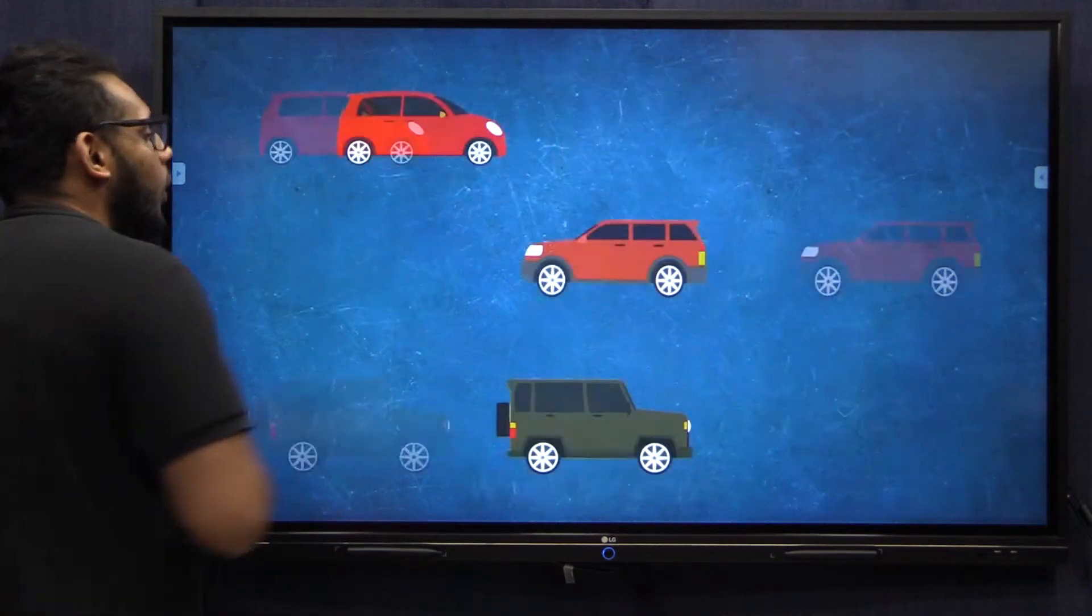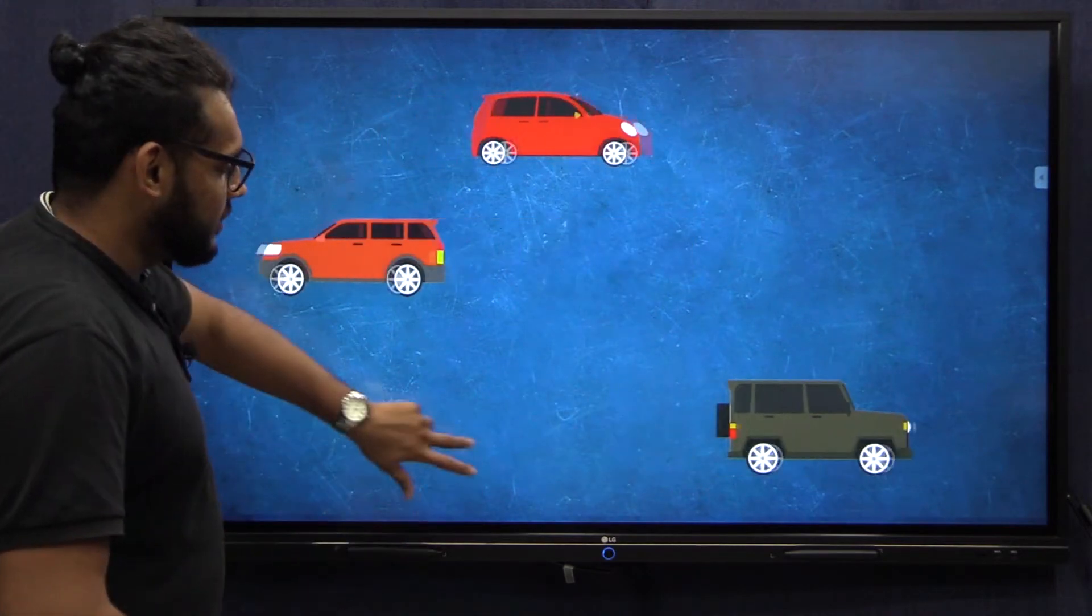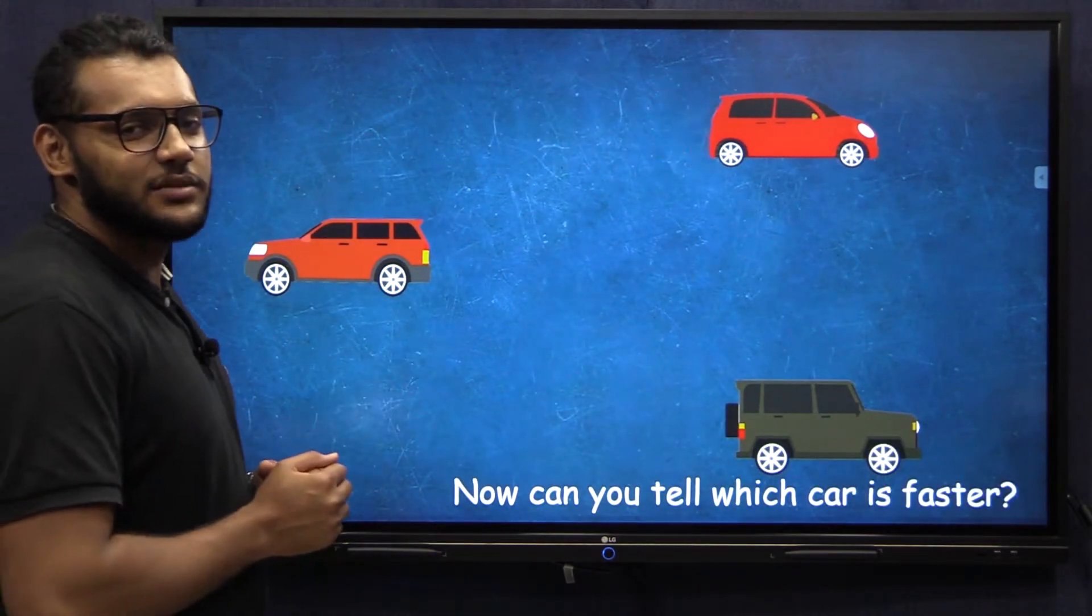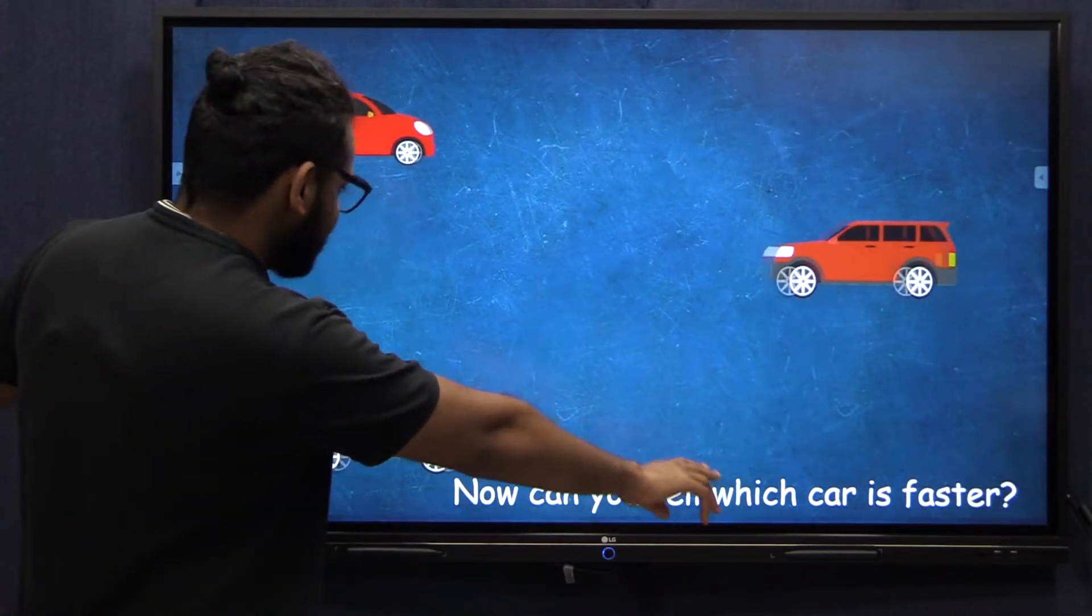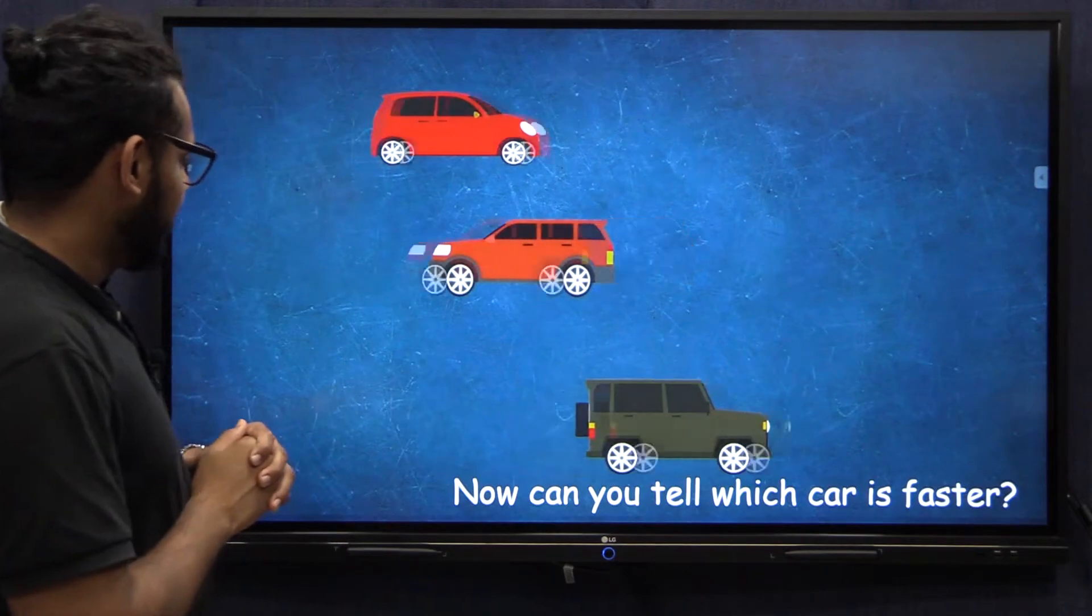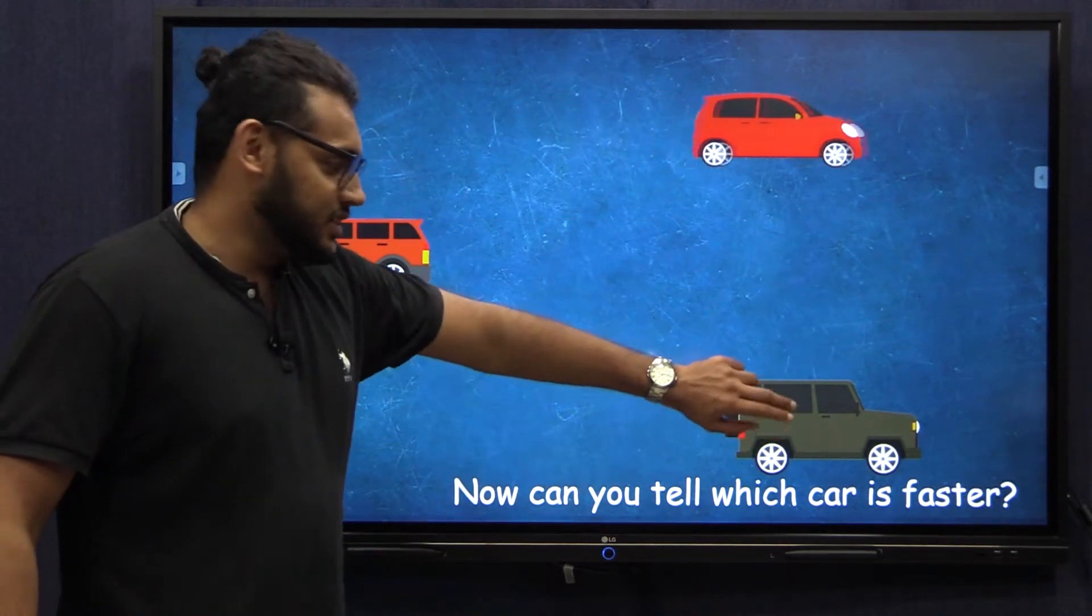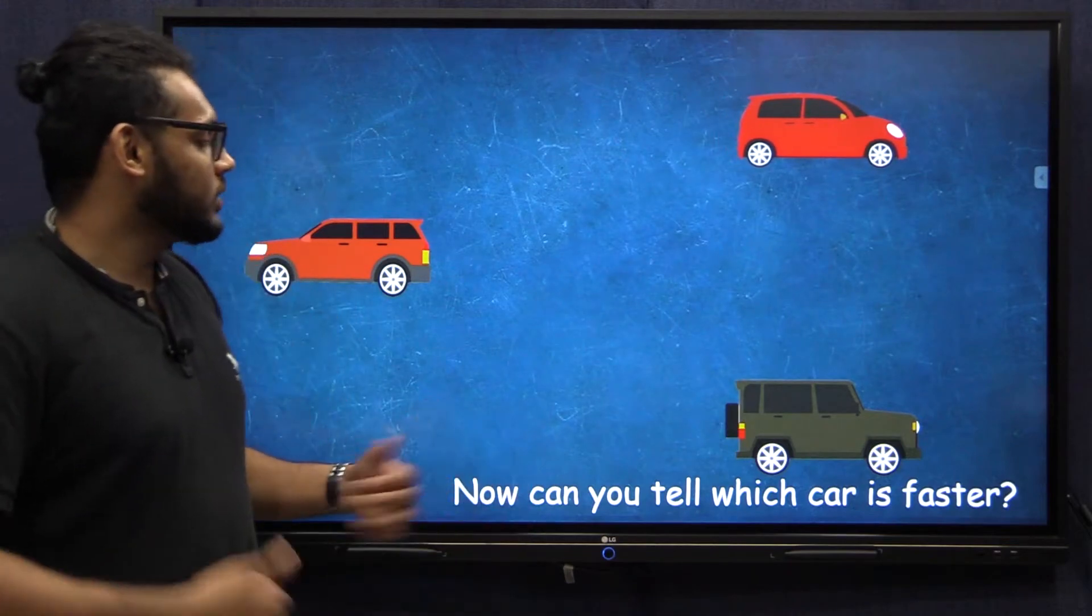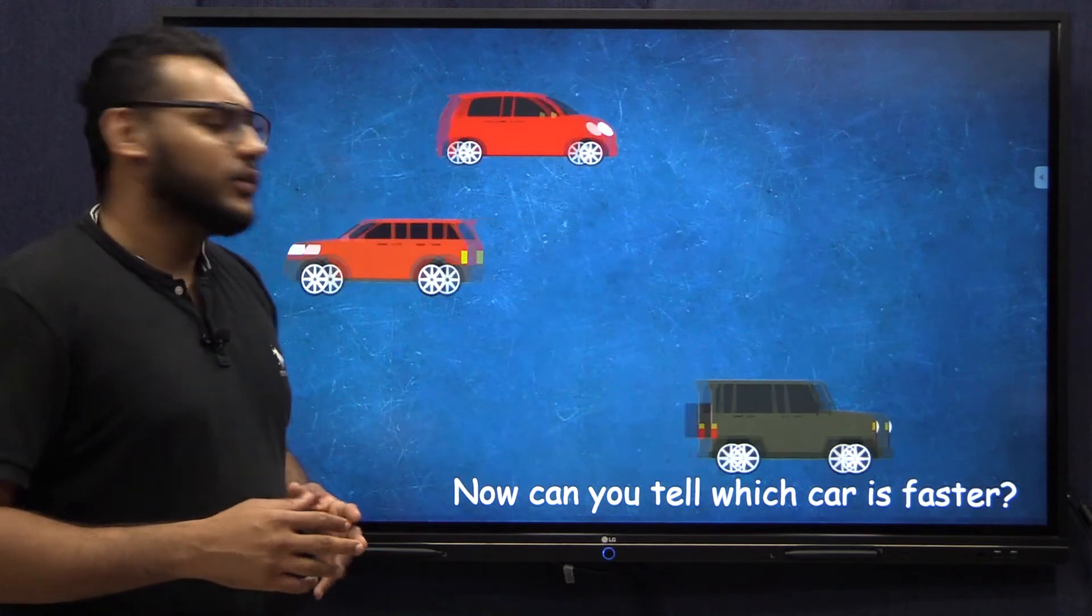But now what if the direction of these cars were changed? Now can you tell me which is faster? It's not as easy as it was before is it? Now you can't tell if this one is faster or this one is faster. It's a bit confusing but the answer is this. Now how was I able to understand this by looking at this? It's not that evident.